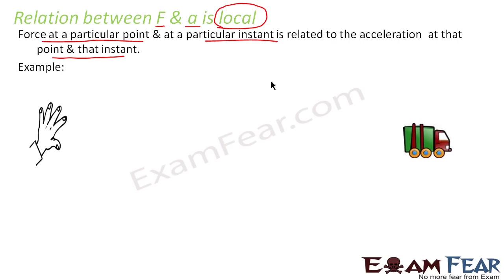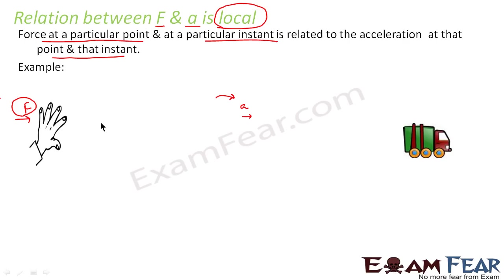For example, consider a toy car. If you apply a force F on it and it moves with acceleration A, the force applied at this point in time is related to the acceleration produced at that same point in time. This force has nothing to do with the car's past acceleration or the acceleration of some other car elsewhere. This is what we mean by local.